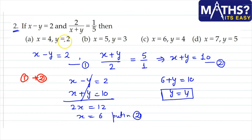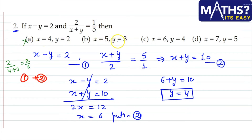Now we check the answer options. Trying x = 4, y = 2 in x + y: 4 + 2 = 6, not 10 — cancel that option. Trying x = 5, y = 3: 5 + 3 = 8, not 10 — not possible either. Trying x = 6, y = 4: 6 + 4 = 10 ✓, and 6 - 4 = 2 ✓. So option C is correct.